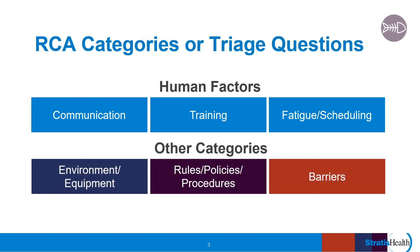This slide shows the set of key categories of causes that are commonly used for root cause analysis in healthcare. These are also referred to as triage questions and are developed from the RCA process used by the Veterans Administration. Three of the categories involve human factors as they relate to communication, training, and fatigue or scheduling. For example, events may occur due to issues related to flow of information, availability of information, or to issues related to routine job training, special training, and continuing education.